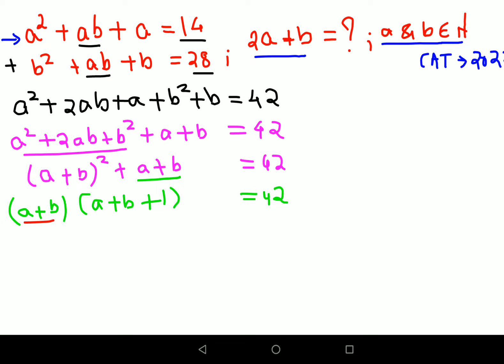We will take A plus B as K, and this will be written as K(K + 1) equals to 42. This means we can say that this is 42 as a product of two consecutive numbers, right? So this can be written as 6 times 7. So from here I can say K value is 6, means I can say A + B equals to 6.